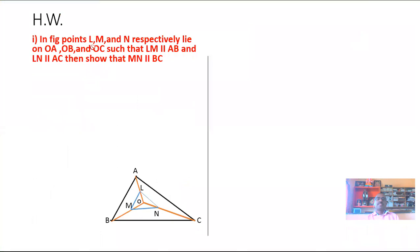Next problem: Points L, M, and N respectively lie on OA, OB, and OC such that LM is parallel to side AB and LN is parallel to side AC. Then show that MN is parallel to BC. Draw this figure.